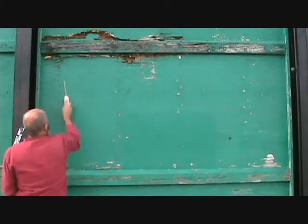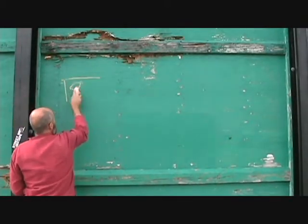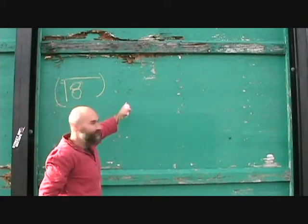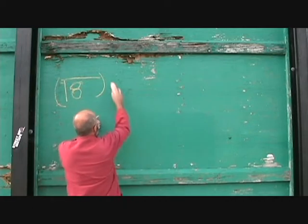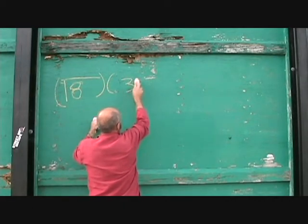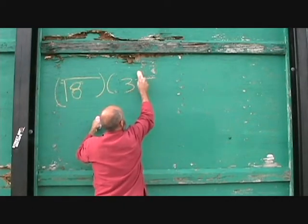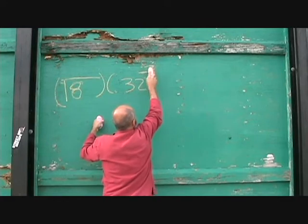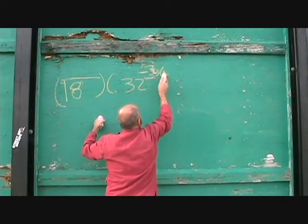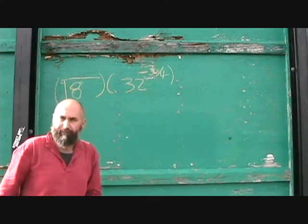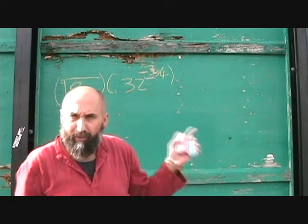Let's talk about radicals and see how we can combine things that are a little more complicated from all the operations we've learned. For example, let's say you have the square root of 8 times 32 to the power of negative 3 over 4.